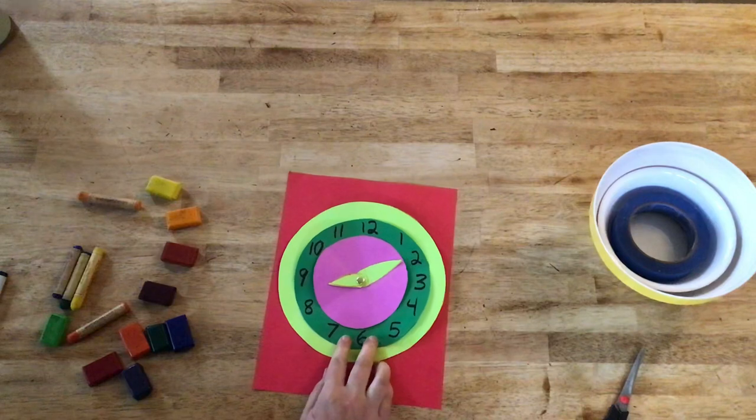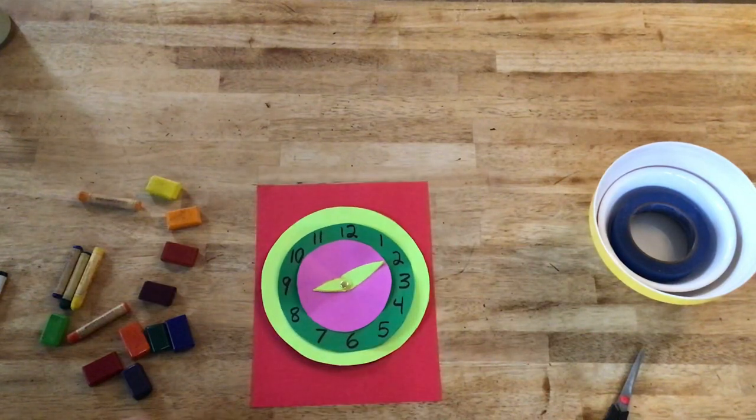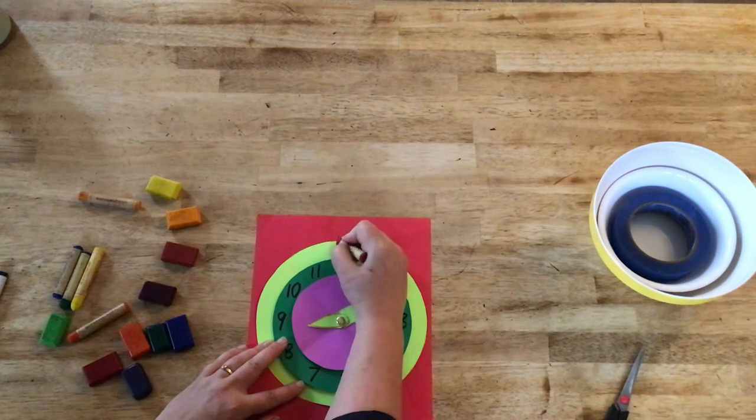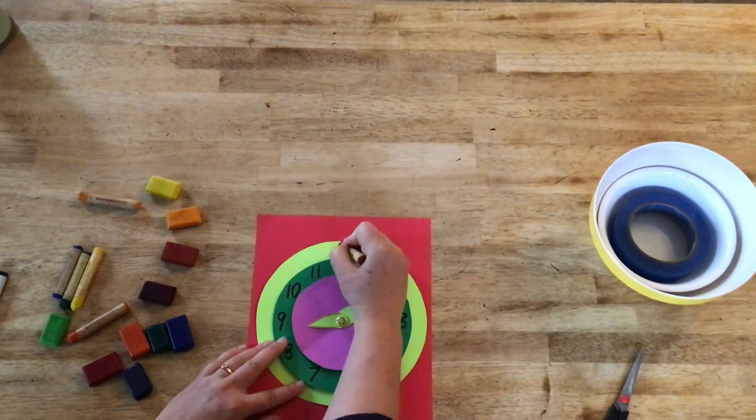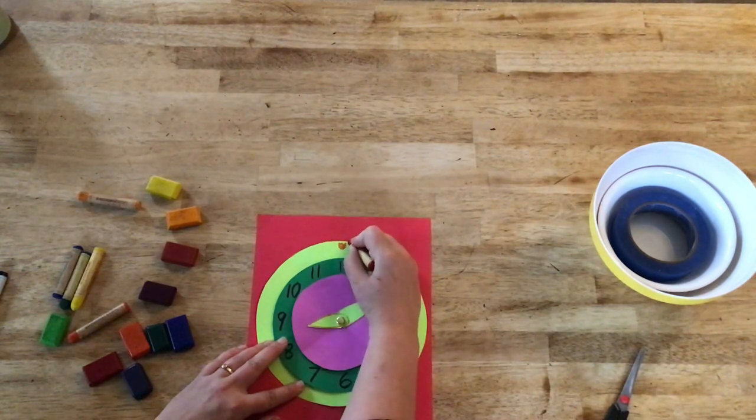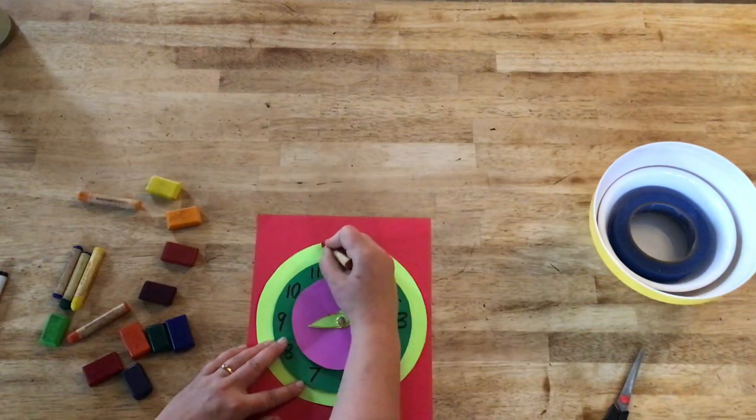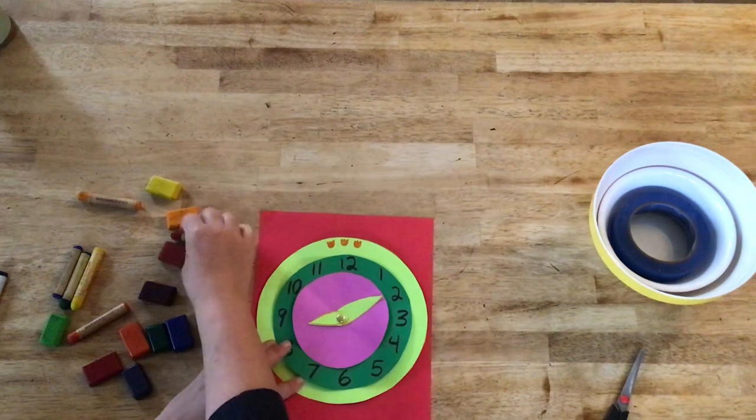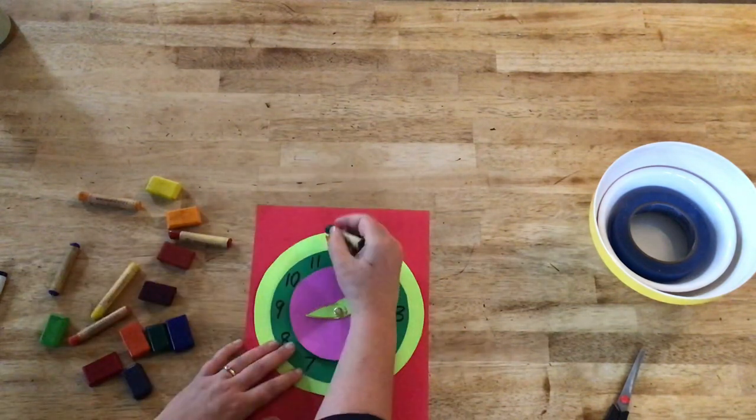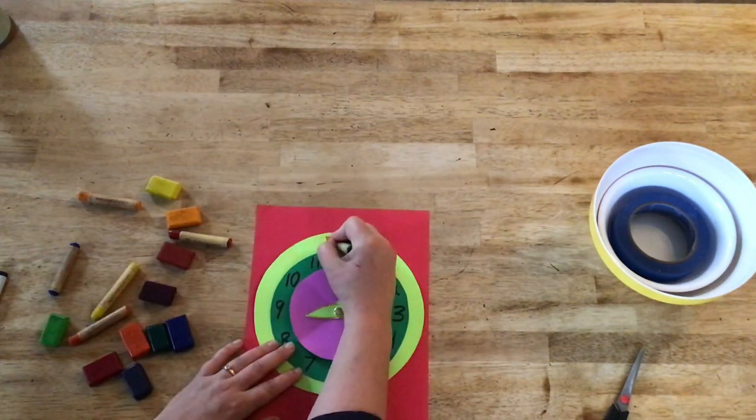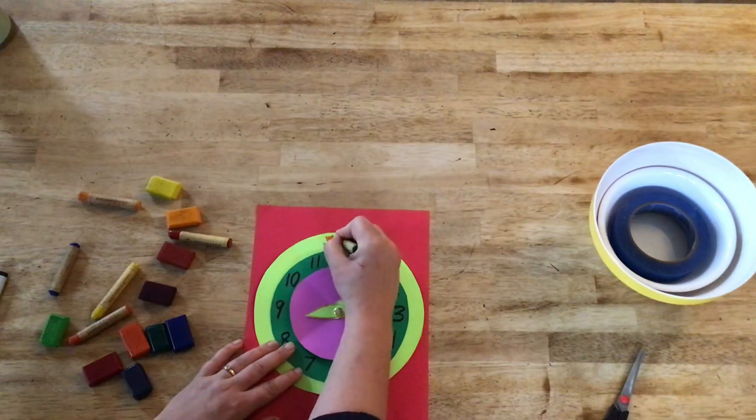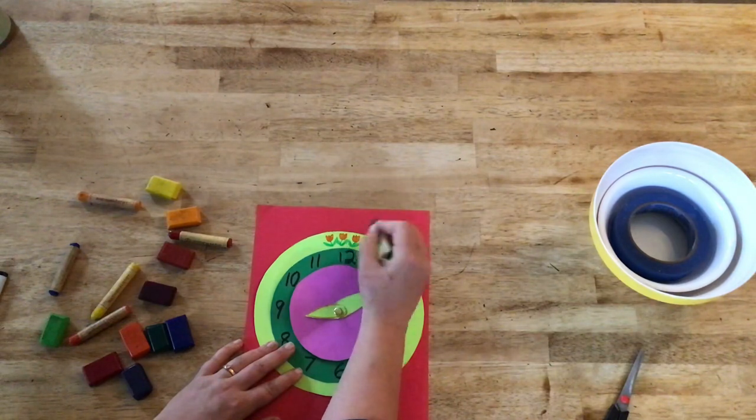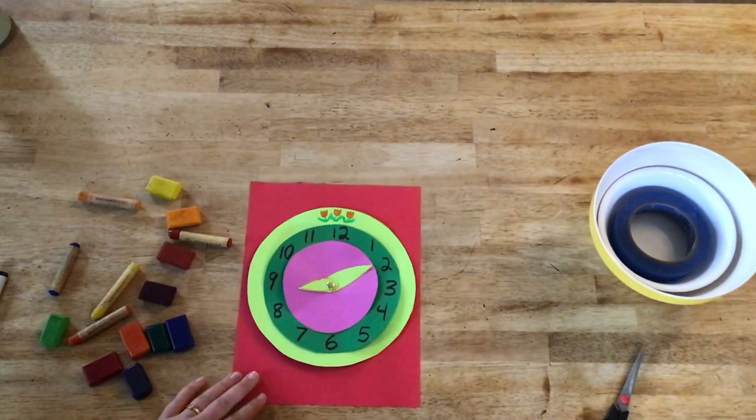So the season we're in right now is spring. So I'm going to go ahead and draw some spring tulips here to represent spring. So this top part is now going to represent spring because that's the season that we're in. You could come up with lots of things to represent spring. You could draw birds, plants. I've decided to draw tulips.